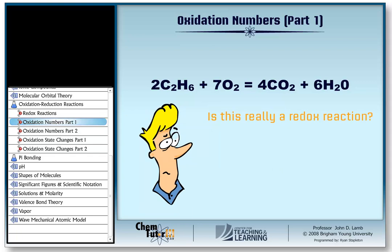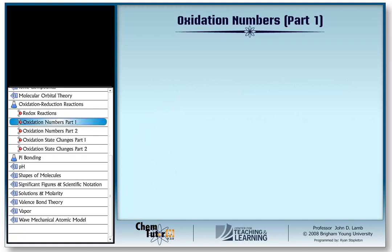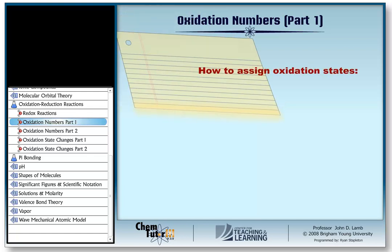One clue that gives it away as a redox reaction is that it is clearly not an acid-base reaction. Neither this carbon species called ethane, nor oxygen gas, is an acid or a base. It turns out this is a redox reaction, and in a minute I'll show you how we know for sure. To do that, I first have to introduce you to a simple system that chemists have devised to keep track of electrons in cases like this. This system involves assigning numbers called oxidation numbers, or oxidation states, to each of the elements in a chemical species. Let's learn how to assign oxidation states, and then I'll show you that this is definitely a redox reaction.